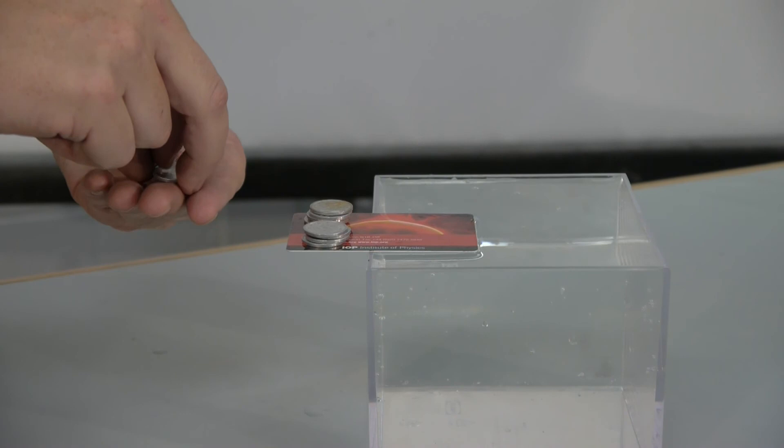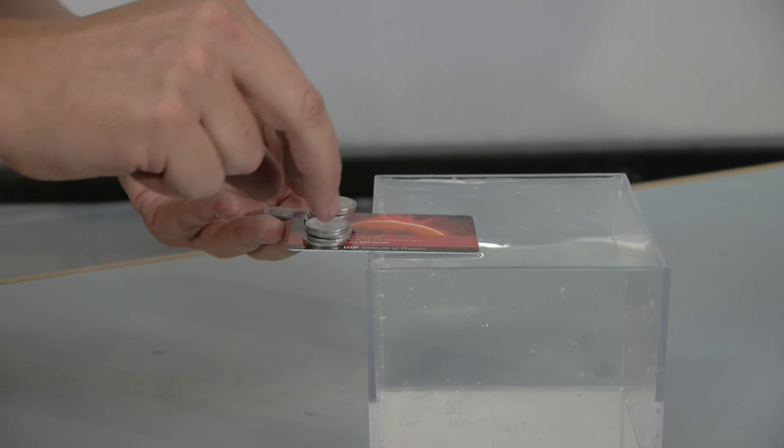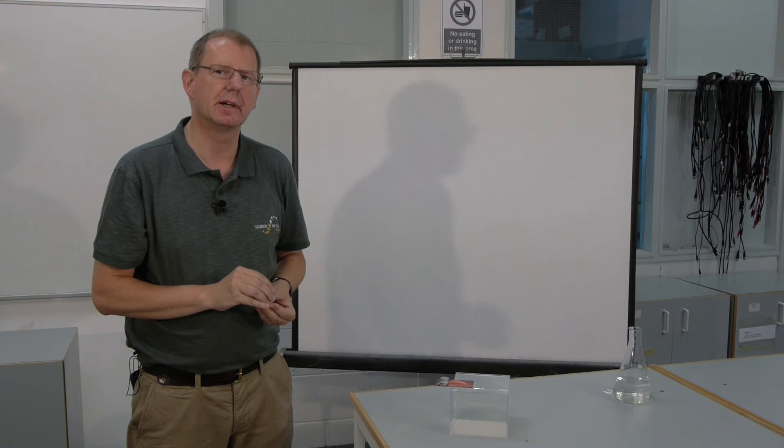So the surface tension is stopping the card tipping. By taking measurements and calculations, the distance from the yen to the fulcrum, we can actually calculate a value for the surface tension of the water.